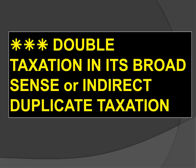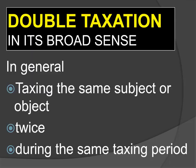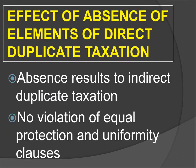What is double taxation in its broad sense or indirect duplicate taxation? Do not forget — remember the elements of direct duplicate taxation. If one of them is missing, then it is indirect duplicate taxation, and it does not violate the Equal Protection Clause of the Constitution. Therefore, it should not result in nullification of a tax measure. In general, it's taxing the same subject or object twice during the same taxing period.